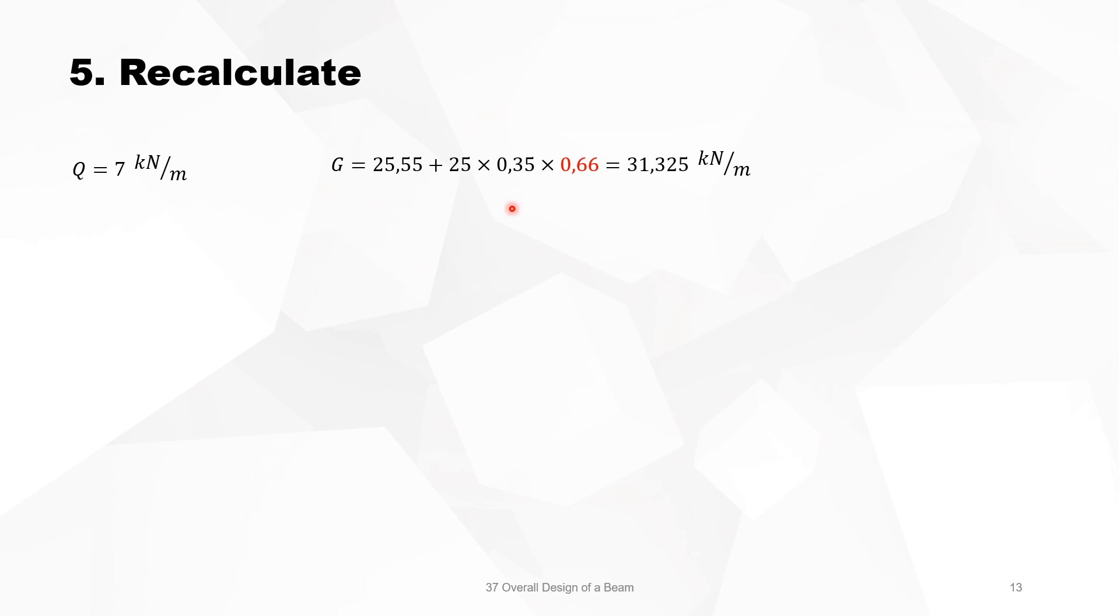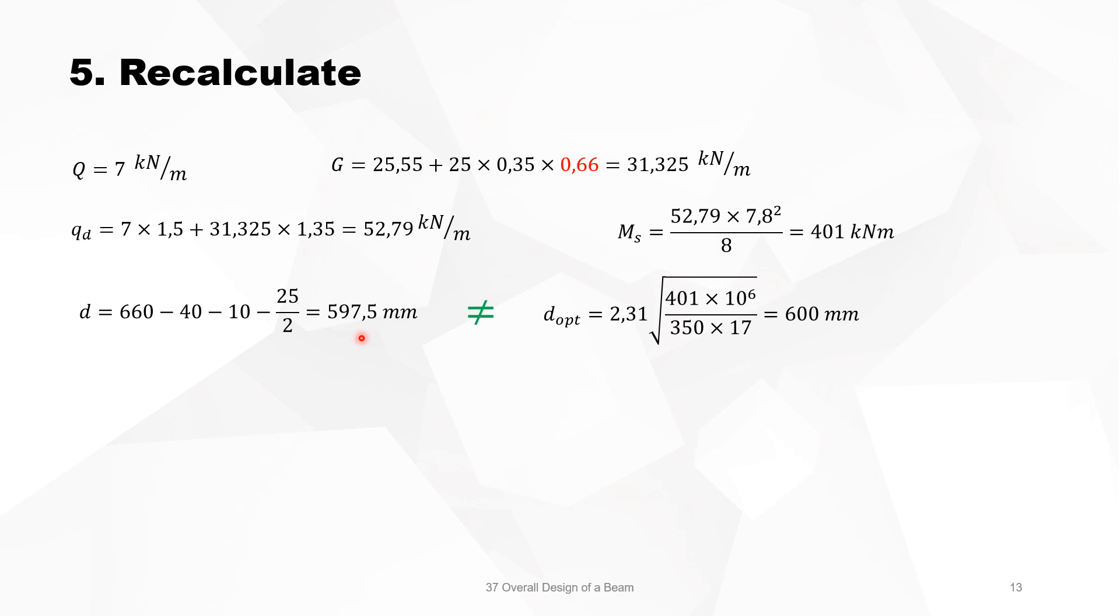So we recalculate it again, 0.35 times 0.66. We calculate the load in ULS, the bending moment, the effective depth. Now we are not going to recalculate again the optimum depth, because otherwise you can go on forever. So now we have chosen a section of 350 times 0.660.